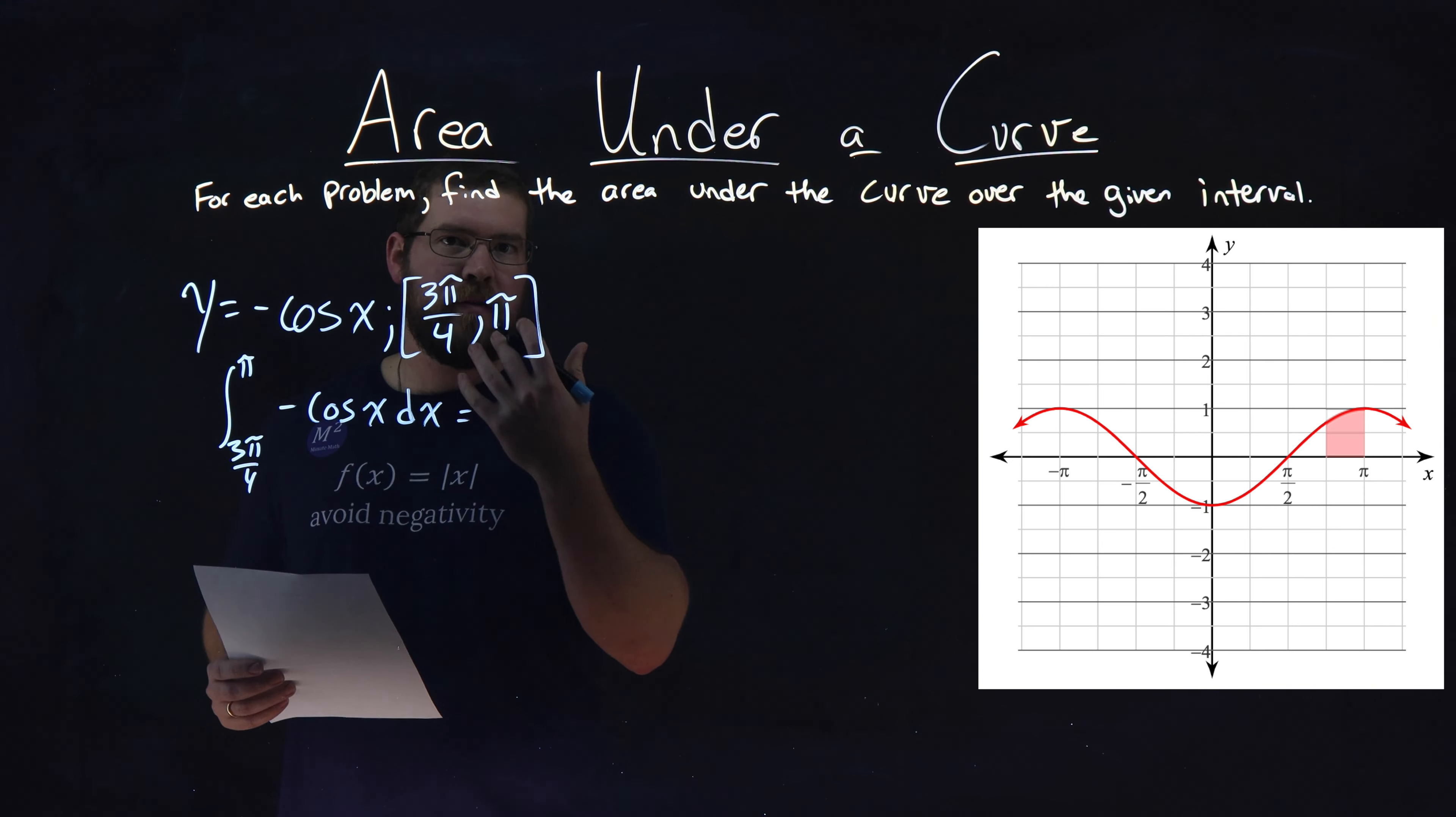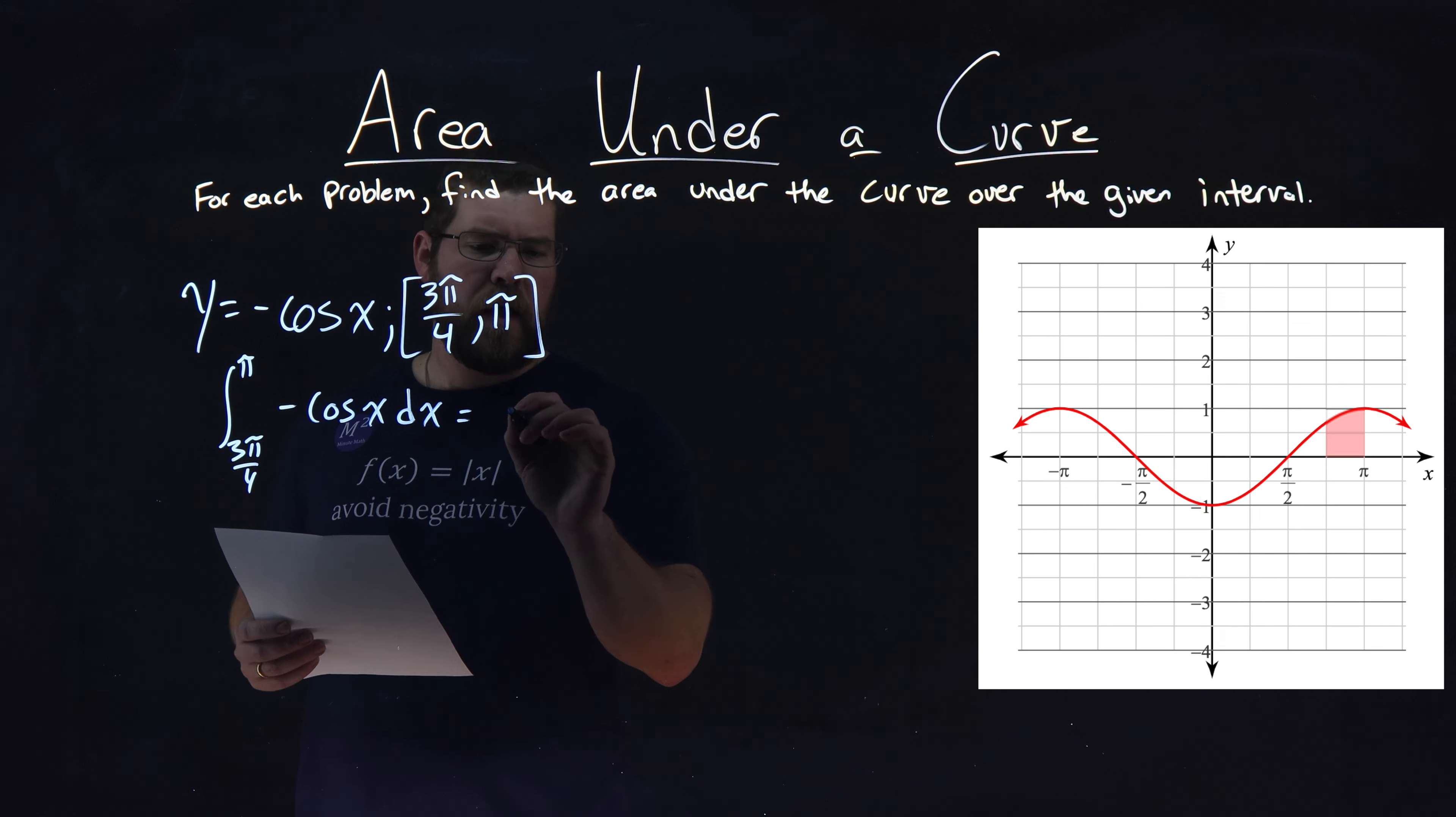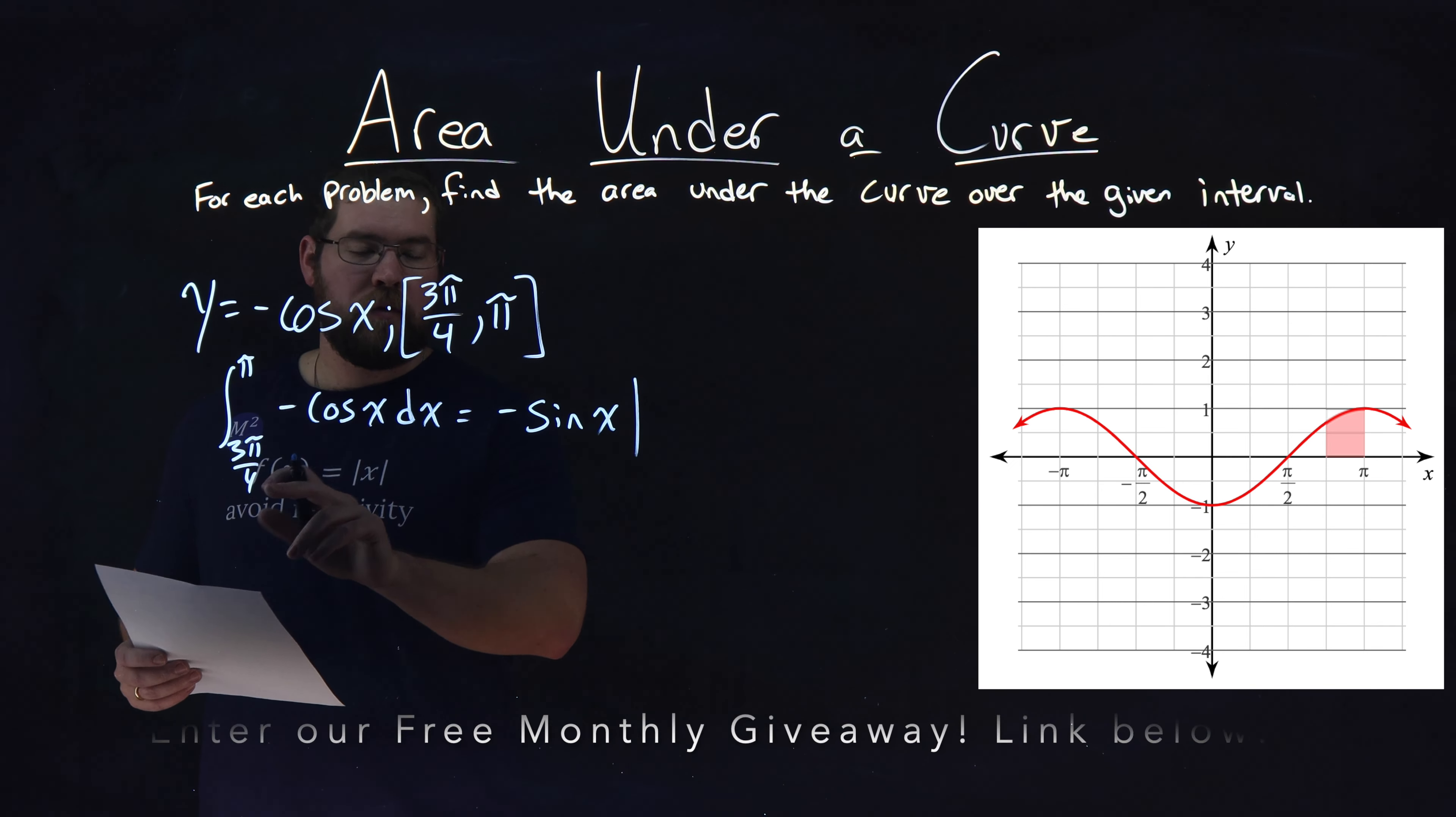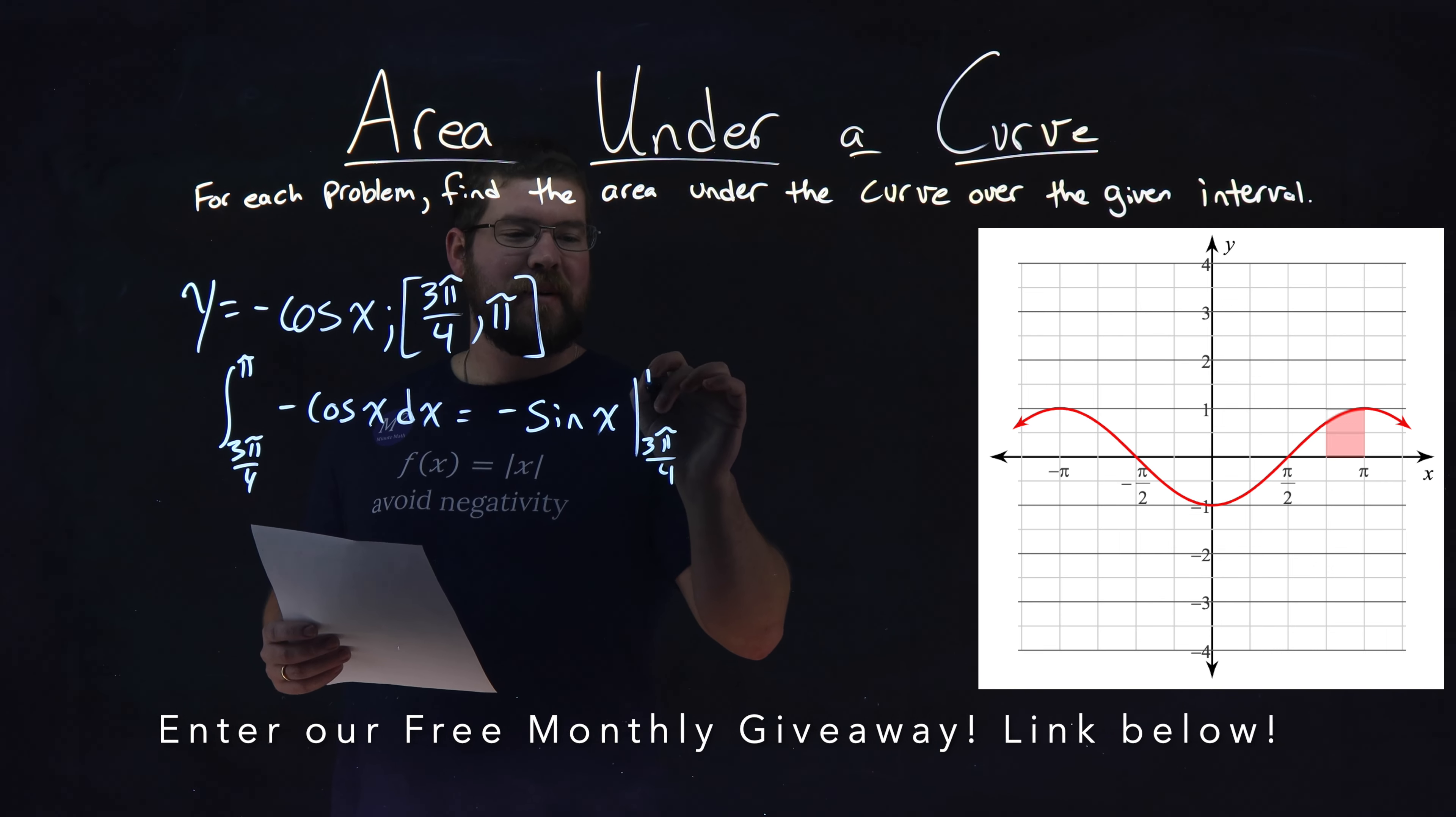Now from here, we need to find what is the integral of negative cosine of x, and that is negative sine of x. So we have negative sine of x here over the interval from 3π over 4 to π.